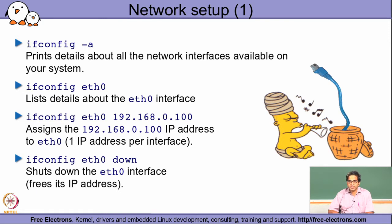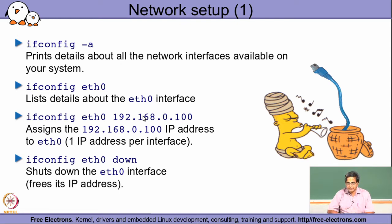If I want to specifically list details about one interface alone, I would say ifconfig followed by the name of the interface. The default name of the first Ethernet interface is eth0, and if there is a second Ethernet interface, the default name for that is eth1. Using ifconfig eth0 will give details only about the eth0 interface — such as the IP address assigned, whether it is currently up or not, how many bytes it has sent and received, the MAC address, and so on.